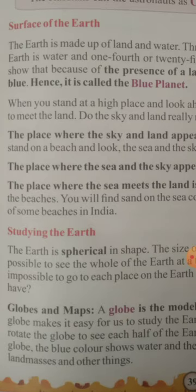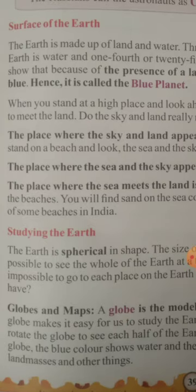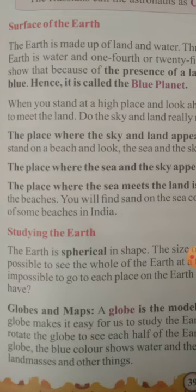The globe is the model of the earth. The model of the earth is called a globe. The globe makes it easy to study the earth. We have to rotate the globe to see each half of the earth at a time. On the globe, the blue colours show the water and other colours show land masses and other things.